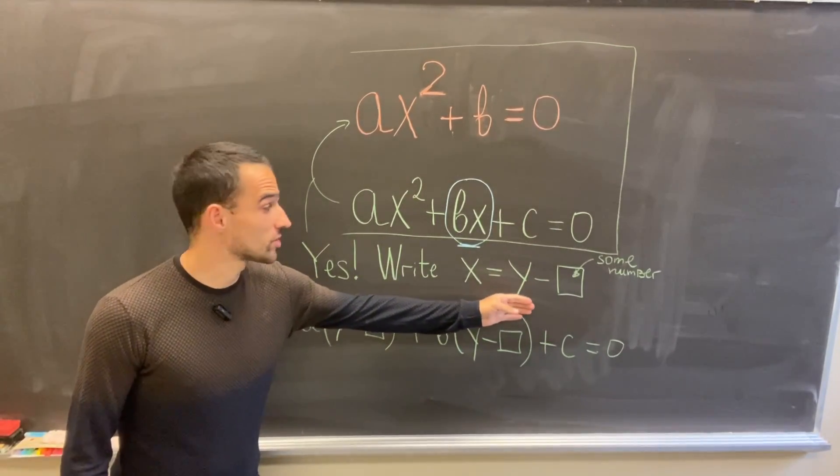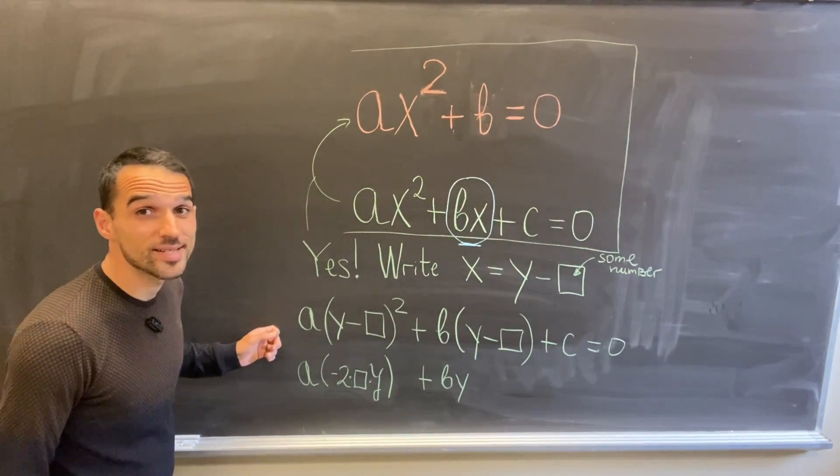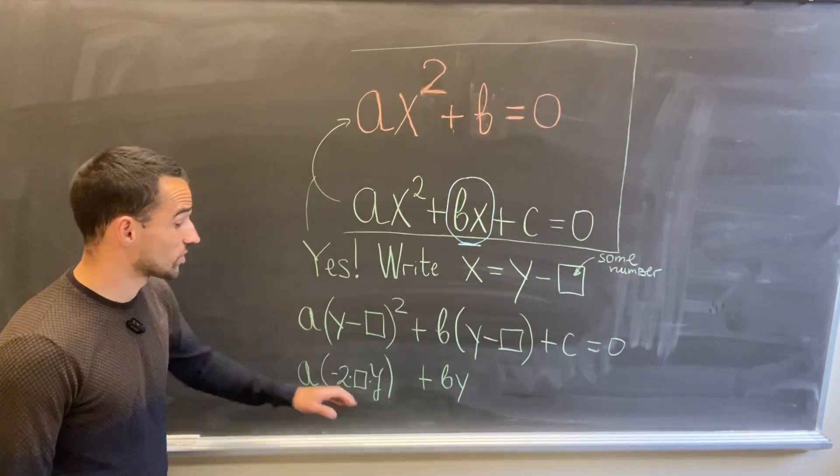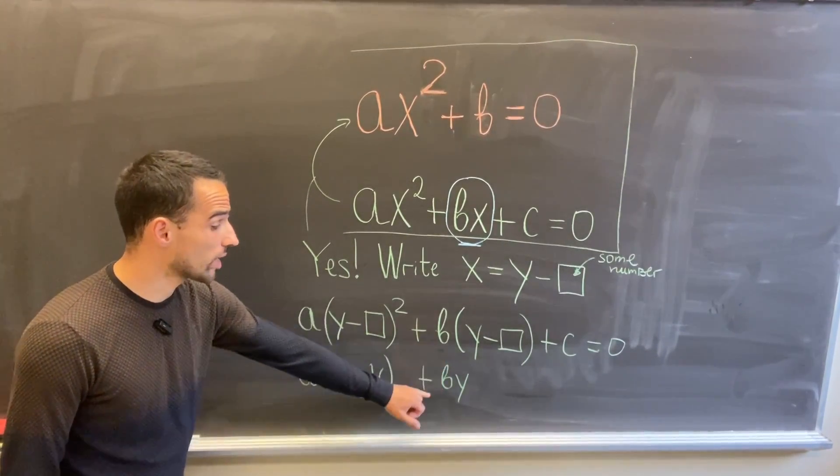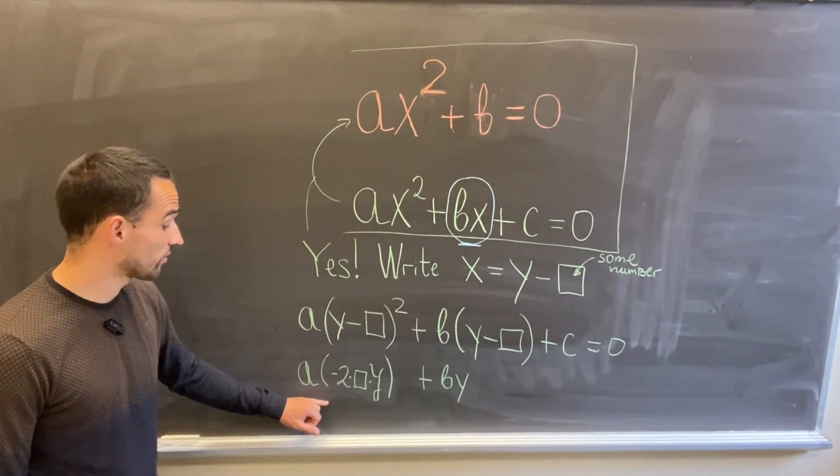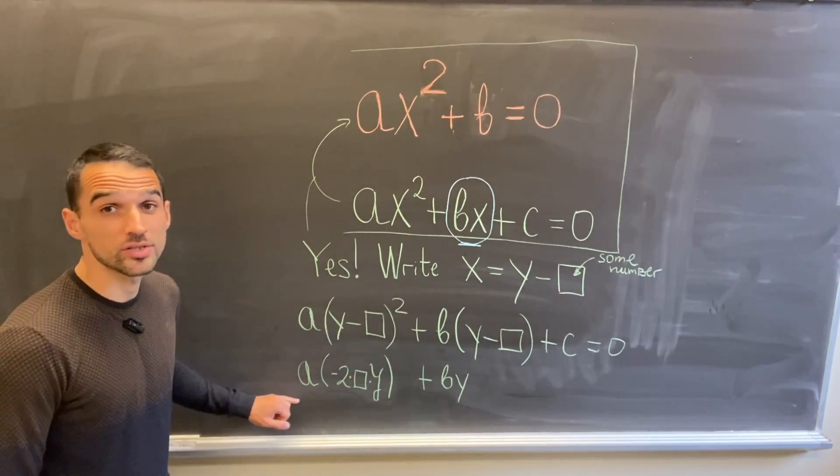Replace x with y minus a², and let's see what happens. In front of y here we will have +by, and here in front of y we will have a times -2 times the square. We want these two to cancel out.